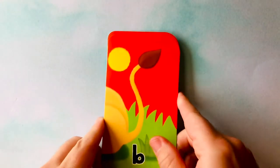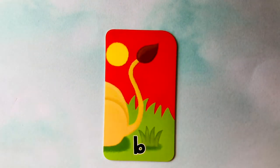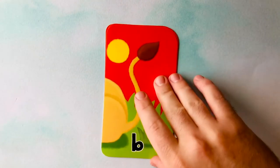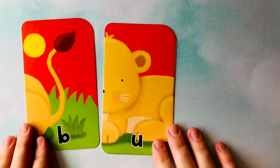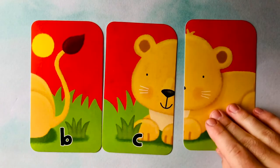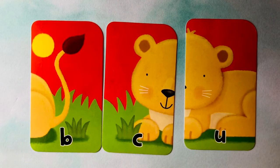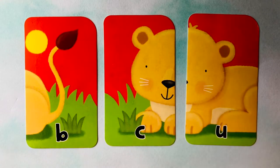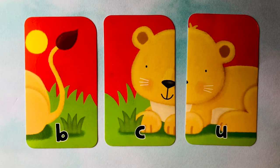Let's do this one next. Looks like we're starting off with a B. We also have a U. And we have a C. This kind of looks like a lion, but not an adult lion — it looks like a baby lion. Do you know what those are called? They're called cubs.